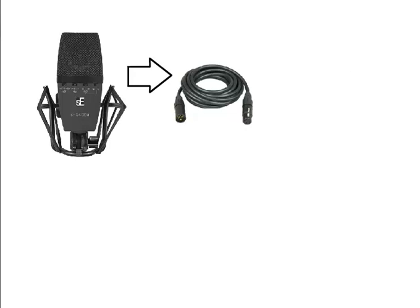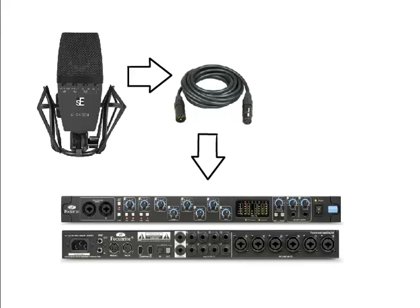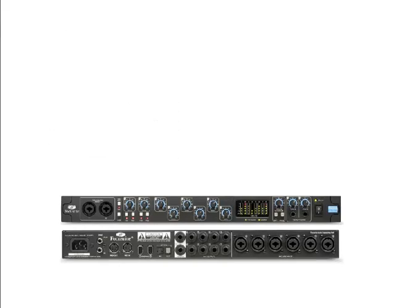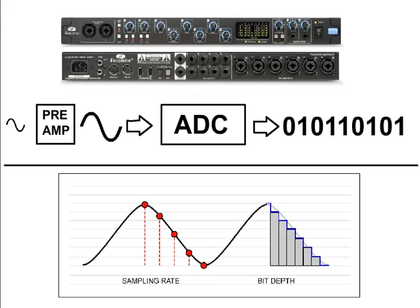The signal travels through the shielded XLR cable connected to the microphone and into my Focusrite Sapphire Pro 40 audio interface. The audio signal will be amplified by a microphone preamp into a line level audio signal, after which it will then go through an ADC, an analog to digital converter.